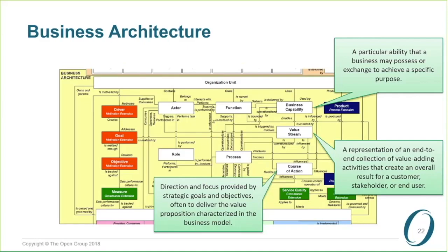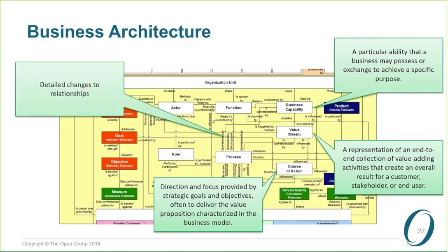We've now put in lots of changes to relationships, for example linking course of action to goal, value stream to goal, business capability to function, value stream to business capability, and actors to value streams. There has been a lot of thought going into the mapping of the work done in phases A and B on business architecture.